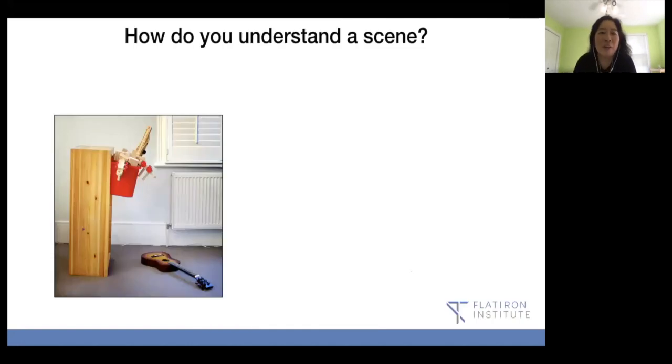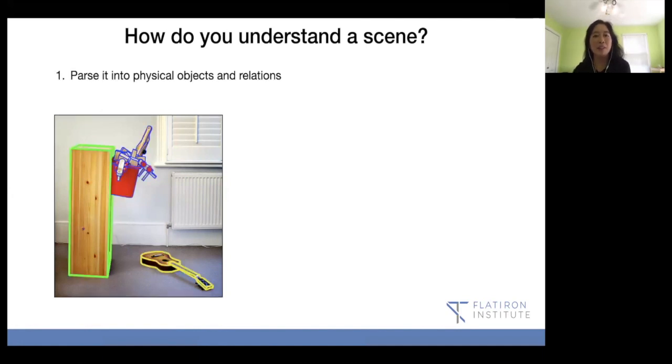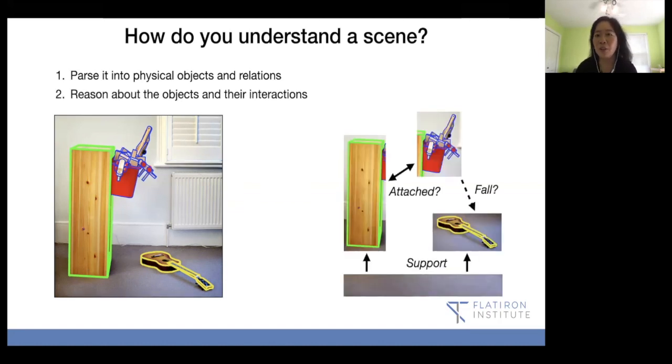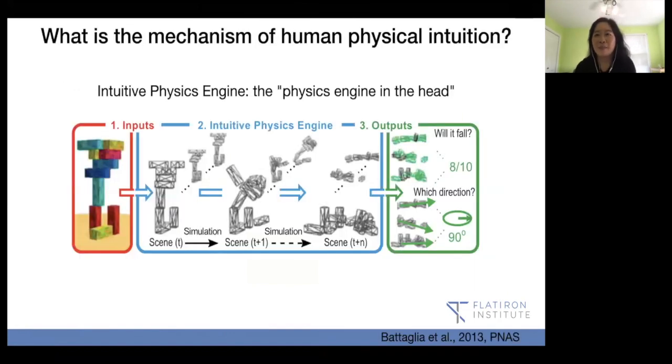I'm going to start this off fairly easy because I think it's nice in case people weren't listening 100% attentively at Miles' talk. How do you understand a scene? This is what everyone does every day, where you look at this picture and you try to figure out what's going on and you parse it into physical objects and relations. It's not just physicists who do this, it's not just scientists. Everyone kind of does that intuition intuitively. And you reason about the objects and their interactions, and you might even describe it with a word, in this case, precarious.